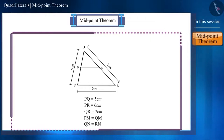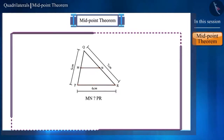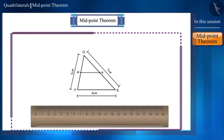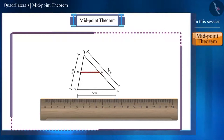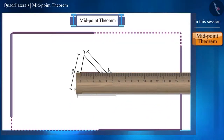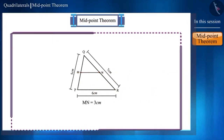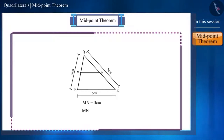Can you now tell any relation between the line segment MN and the side PR? With the help of a scale, find the length of the line segment MN. Friends, you can see that the length of the line segment MN is 3 cm, which is half the length of the side PR.